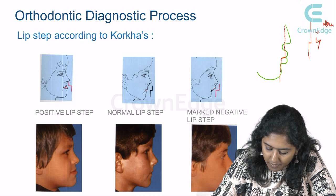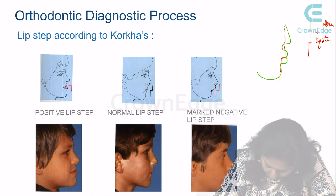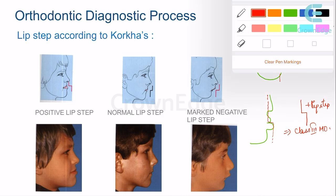A normal lip step appears as a straight line. A positive lip step — where the line comes forward — is seen in Class 3 malocclusion.